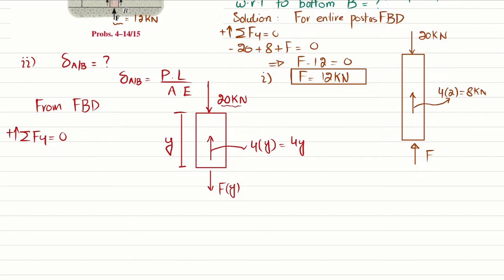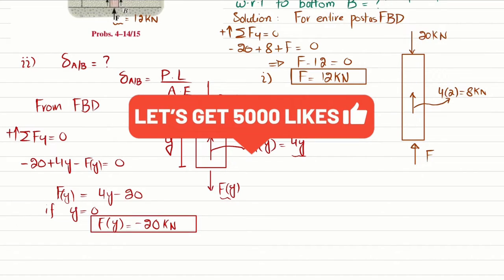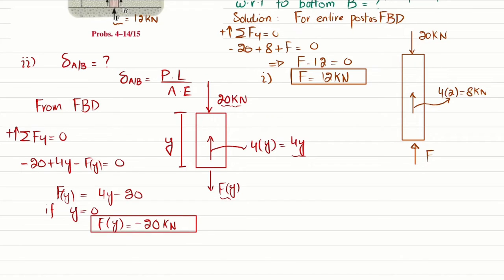The 20 kilonewton force is downward, Fy is downward, and 4y is upward, so: minus 20 plus 4y minus Fy equals zero. Therefore Fy equals 4y minus 20. As a check, when y equals zero, Fy equals minus 20 kilonewtons — a compressive force — which is correct. The displacement of A with respect to B equals the integral from 0 to 2 meters of Fy times dy, divided by A times E.